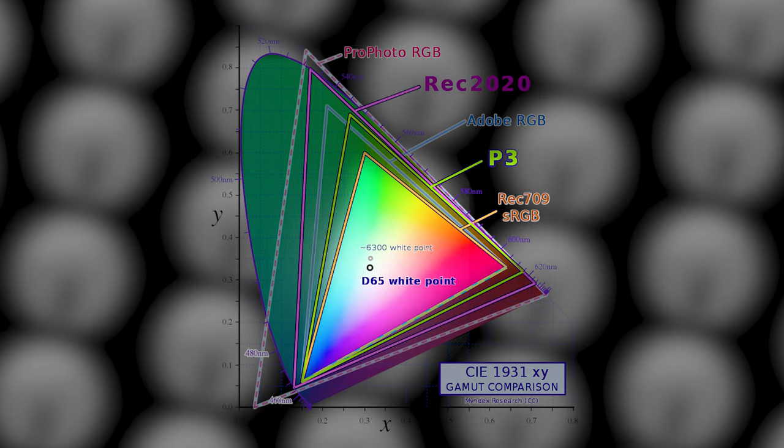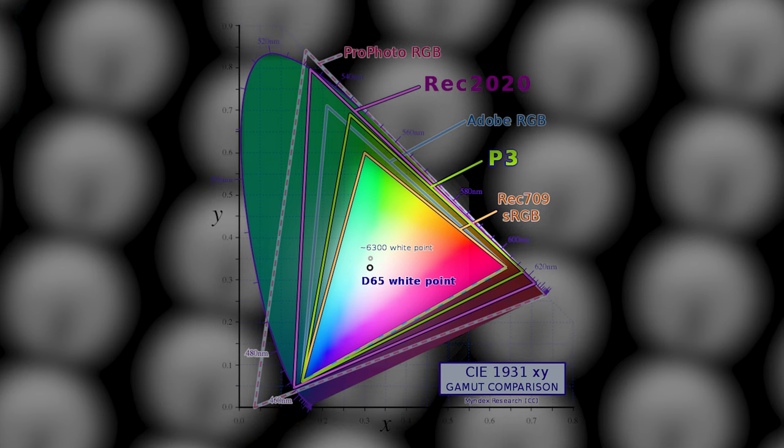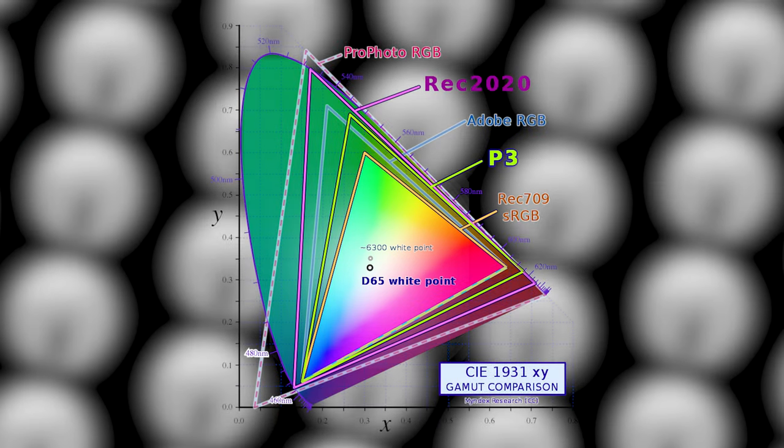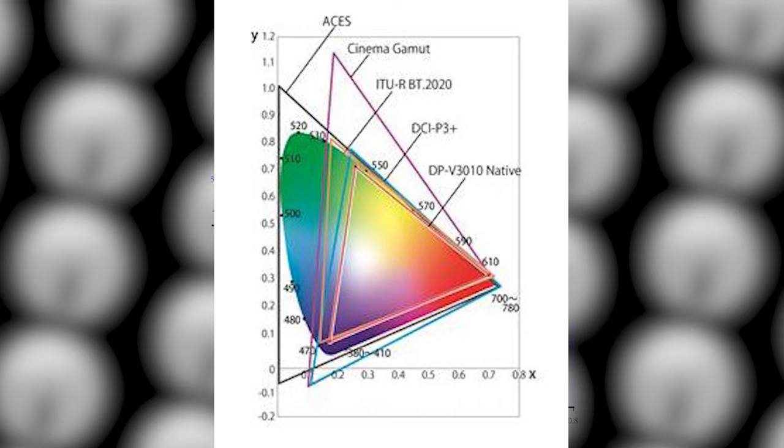A personal favorite of shooting in C-Log3 is that you get to choose the color space you want to work in. If you're watching a video on YouTube, it will always be in Rec 709. In the CIE 1931 chart, Rec 709 shows only a triangle-shaped area of color space information — not a lot compared to Rec 2020, DCI-P3, and even Cinema Gamut.